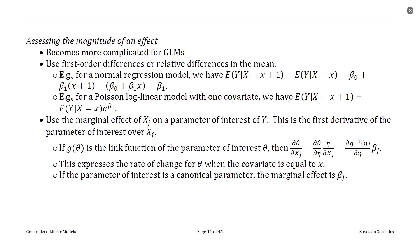If something like this is not available, which is actually frequently the case, sometimes people will try to assess the marginal effect of our predictor xj on a parameter of interest of your response.